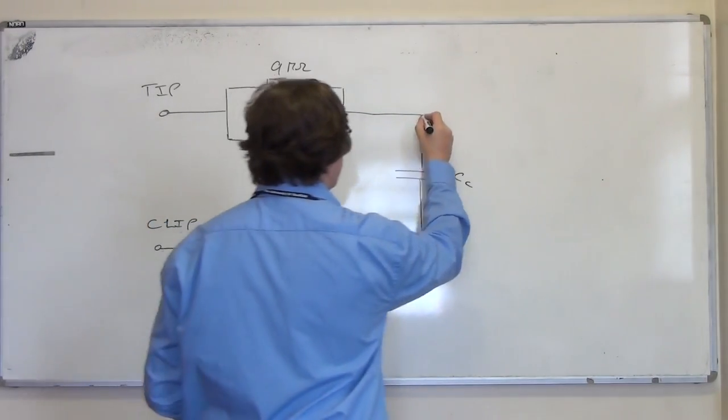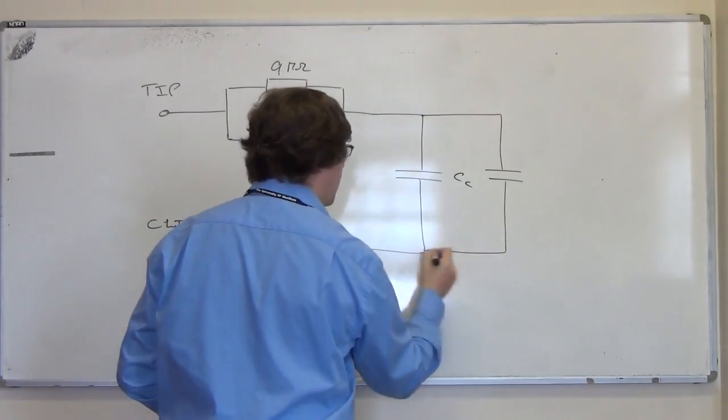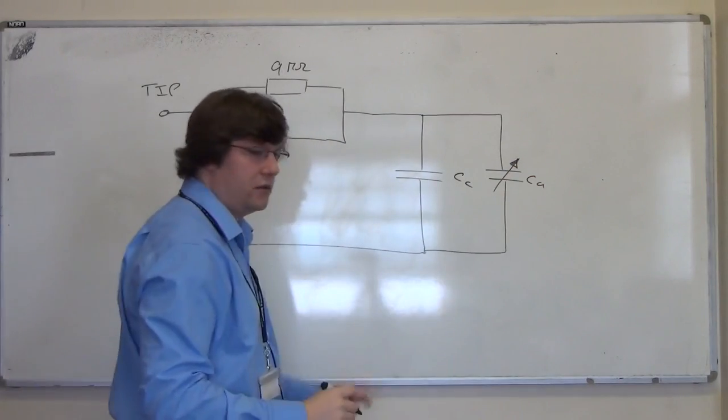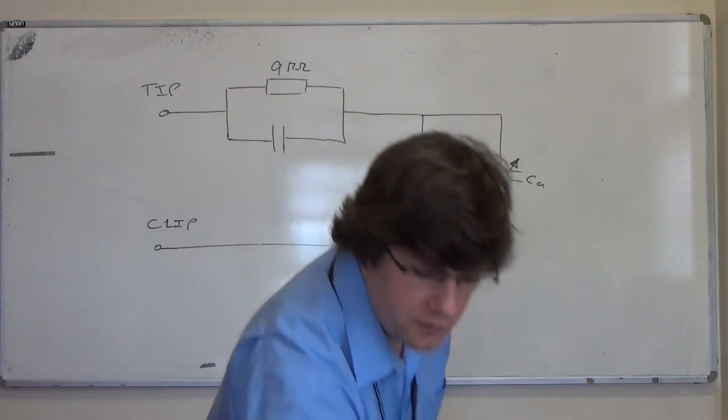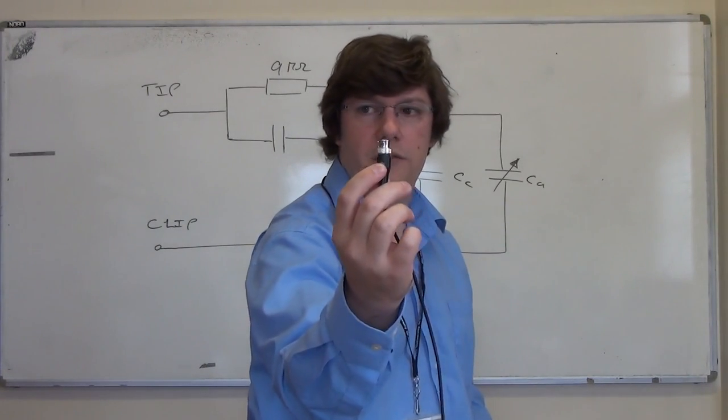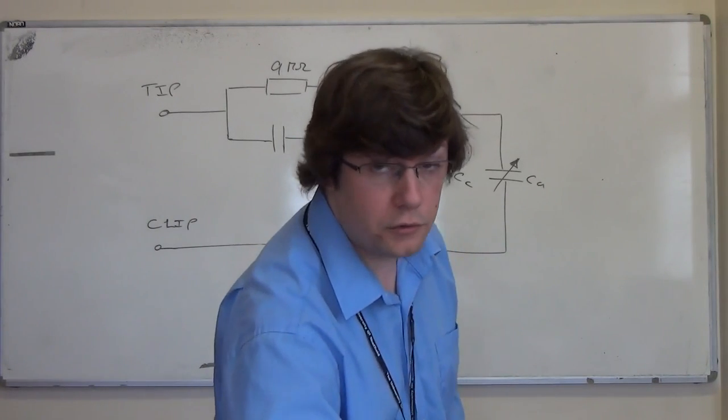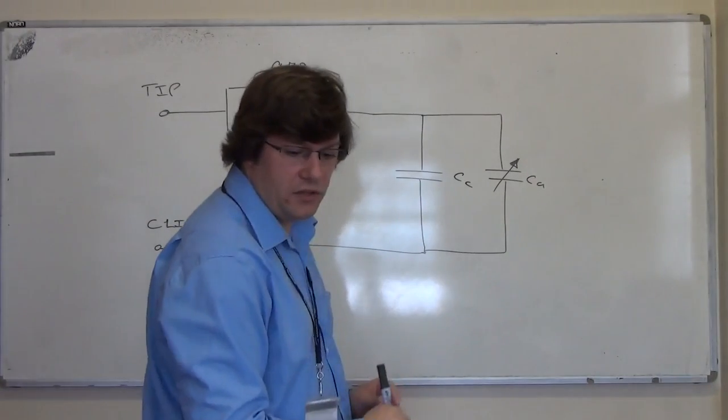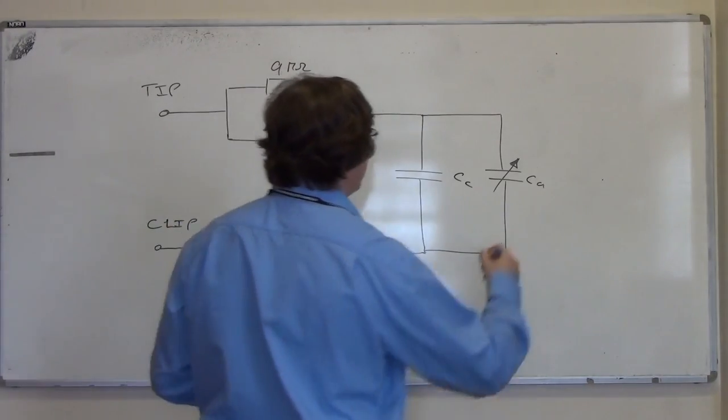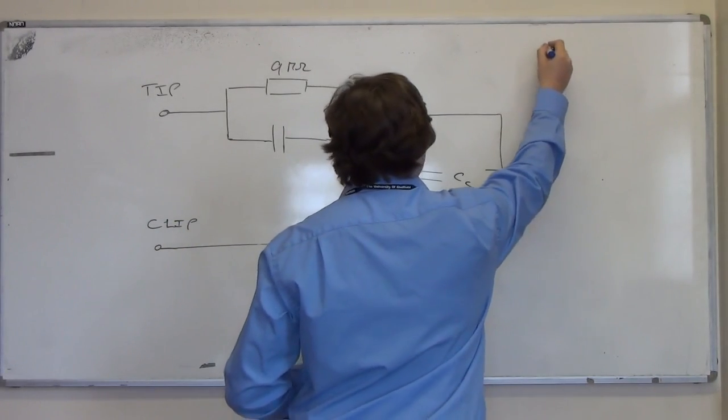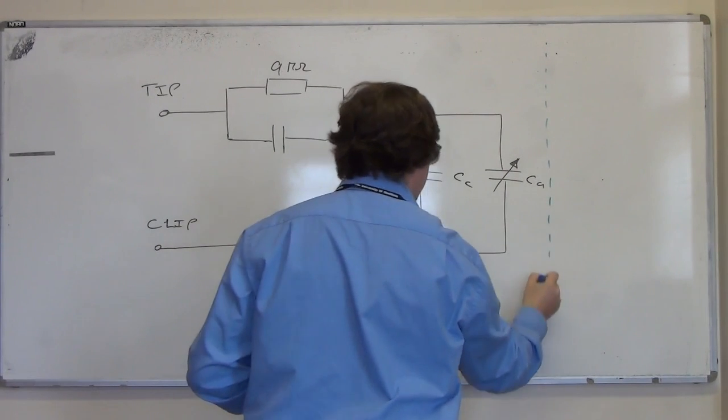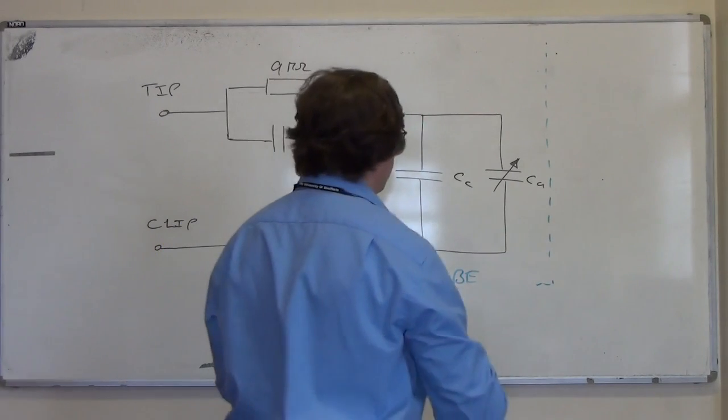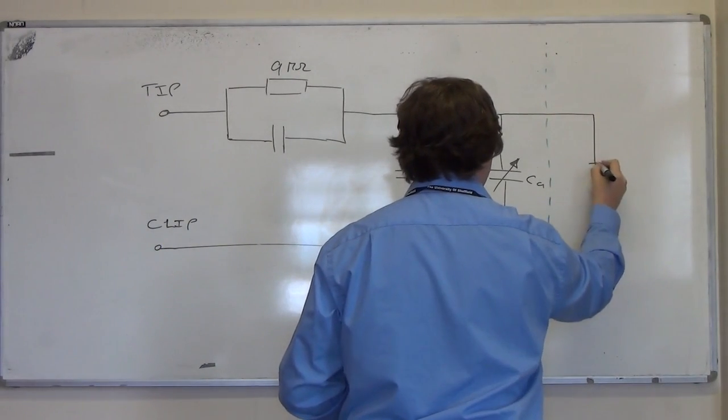There is another capacitance which is the one you are able to adjust. We'll call it Ca, and that turns up in parallel with the cabling capacitance. So this Ca is the capacitance you're tuning with the screwdriver. And then there is the oscilloscope which is attached to this. This is just the probe, and then we have the oscilloscope part.